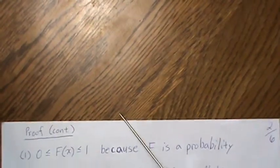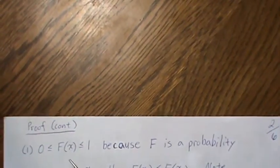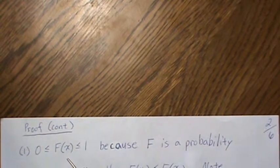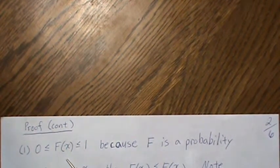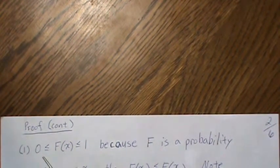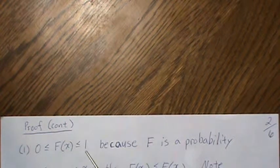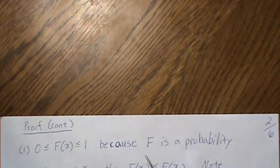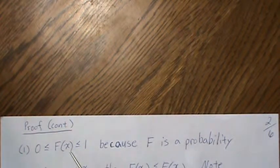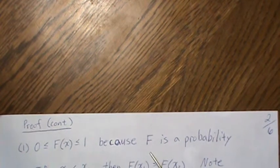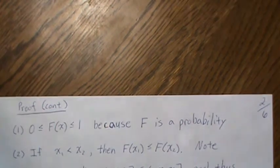The first property is an obvious-type proof. We want to show F is between zero and one, but F is a probability — it's the probability of being in that interval. And probabilities have to be between zero and one, because it's a probability measure.